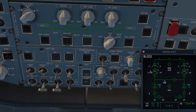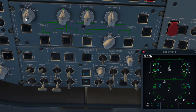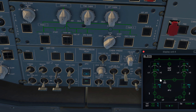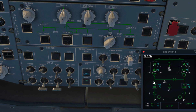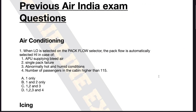So now it's on high and the pack flow also increases to high. Let's try putting it to low — and as you can see, both packs are now at low flow. Now if you look at the question again, when low is selected on the pack flow selector, the pack flow is automatically selected high. The keyword here is automatically.